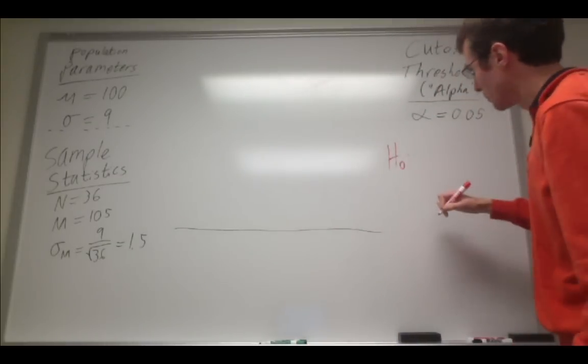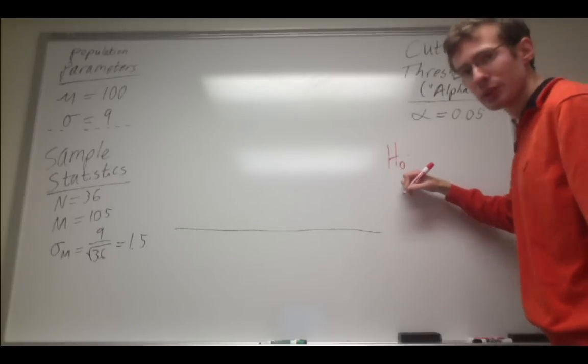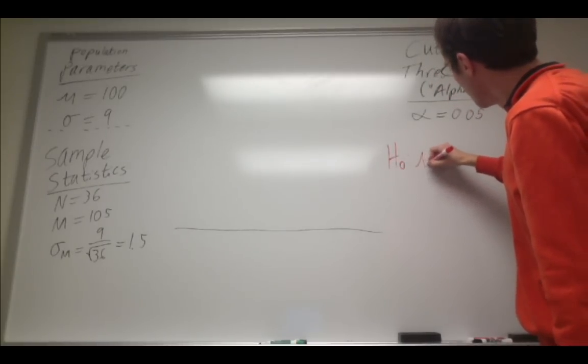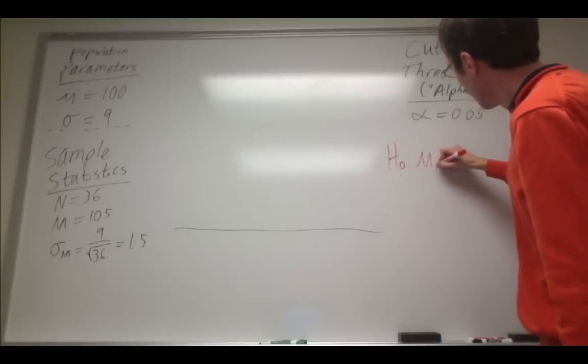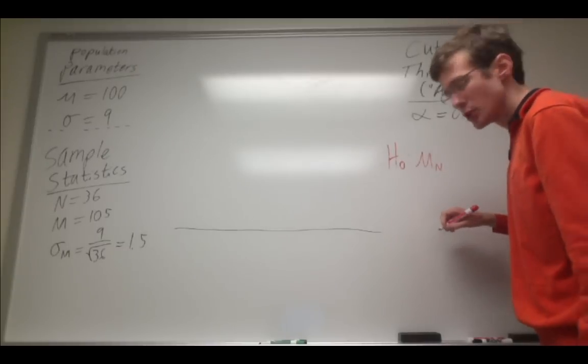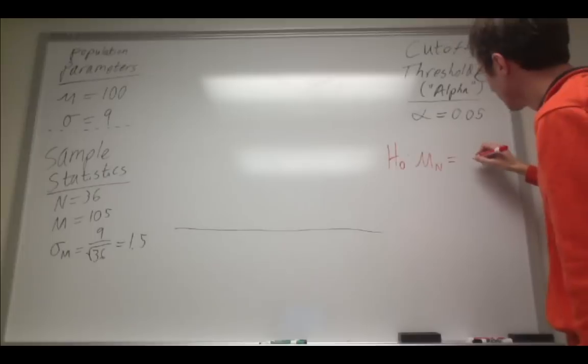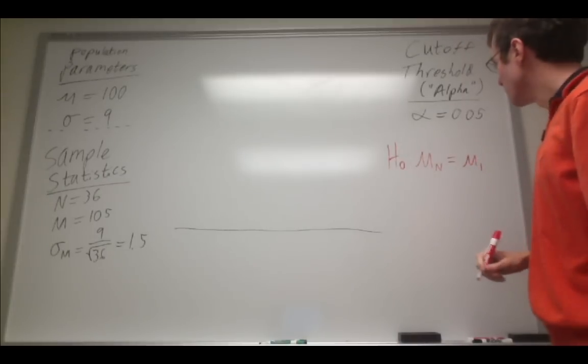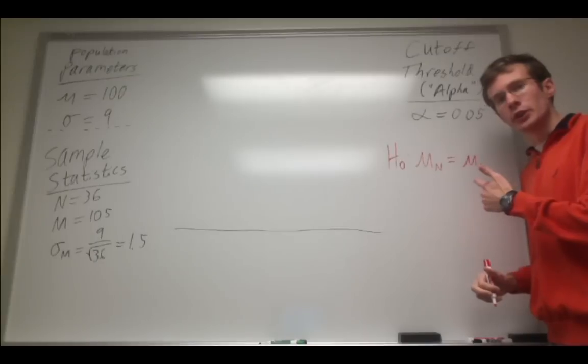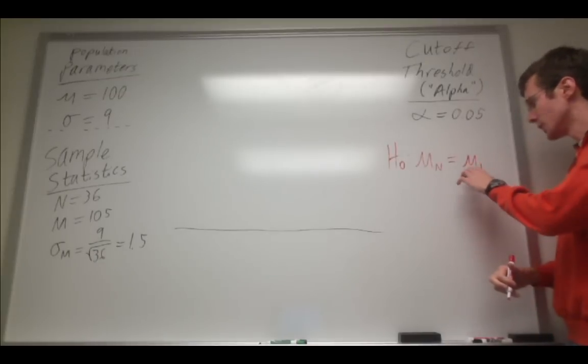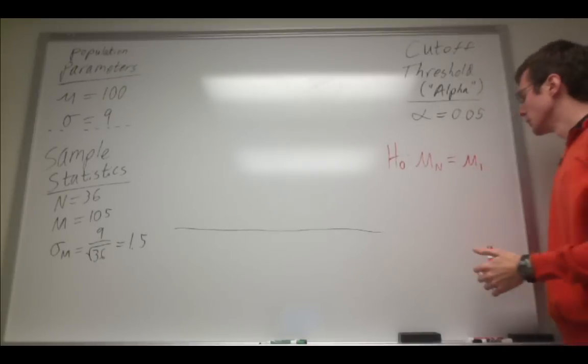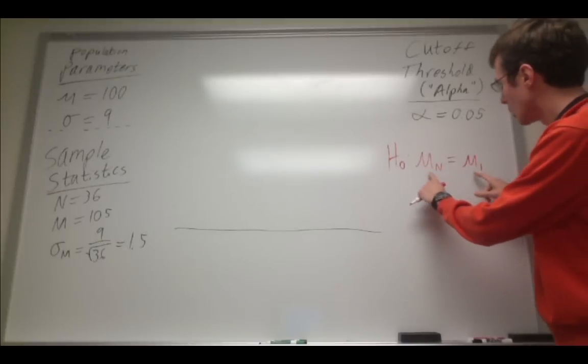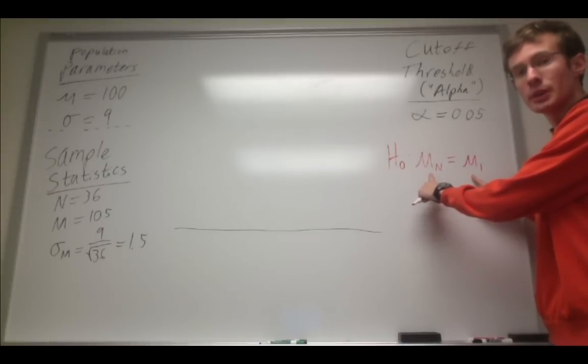In this case, we represent it symbolically with H0, representing the null hypothesis. And I say that mu, or the mean of my null distribution, is equal to the mu for my alternative. You can represent this as mu subscript 1, mu subscript s to represent spinach. Anything that lets you know that these are two separate means.